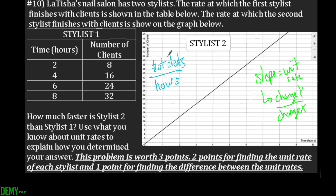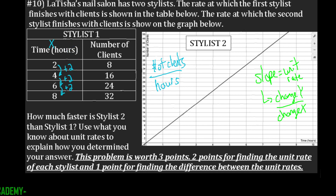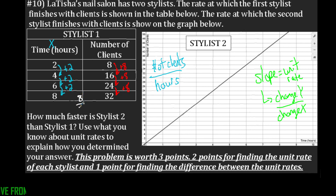Looking at stylist one, my change in x is going to be plus two because for each step it's increasing by two. And then my change in y is going to be plus eight — plus eight each time. So if I write that as a fraction, my slope or my unit rate is going to be eight over two, which is equal to four. So that's going to be four clients per hour — that's the slope for stylist one.